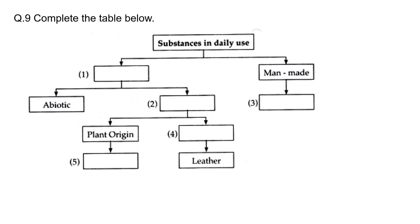Ninth question: complete the table of substances in daily use. The table has two parts: natural substances and man-made substances. Natural substances are further classified as biotic and abiotic, with plant origin and animal origin categories.